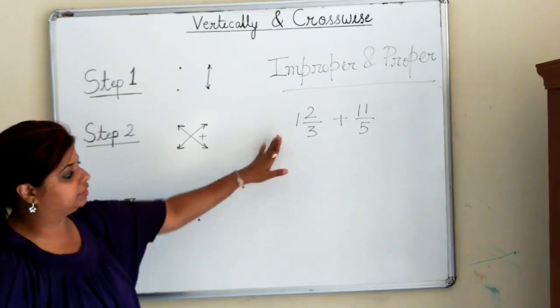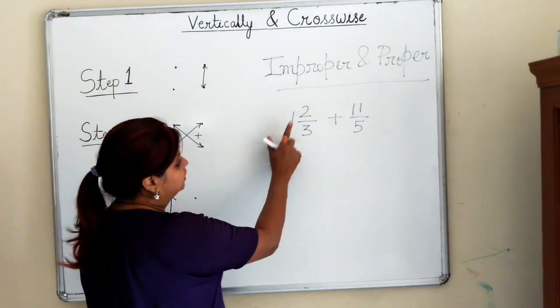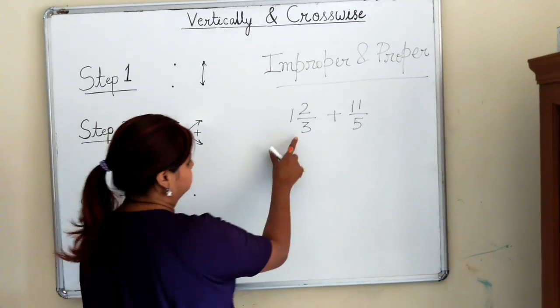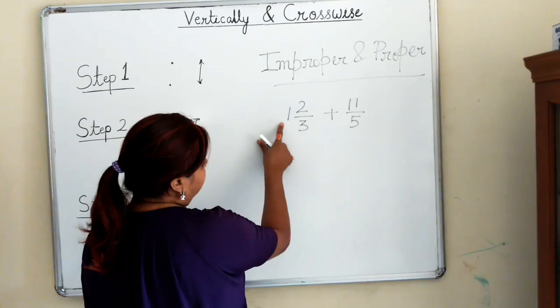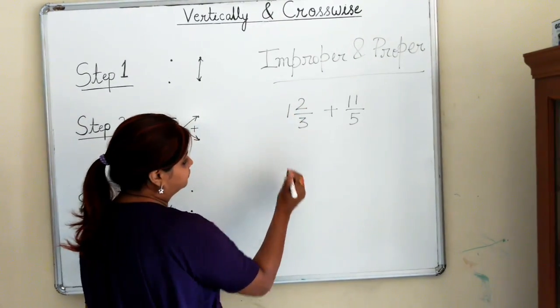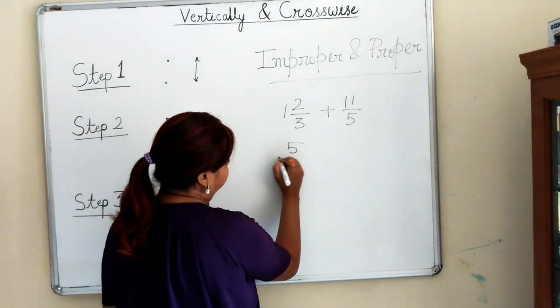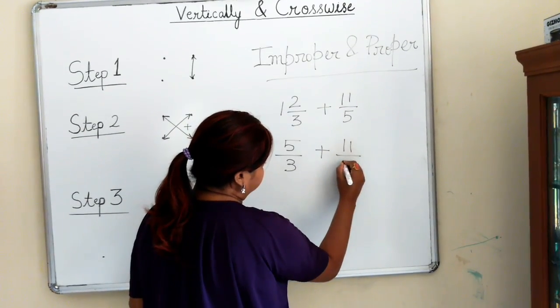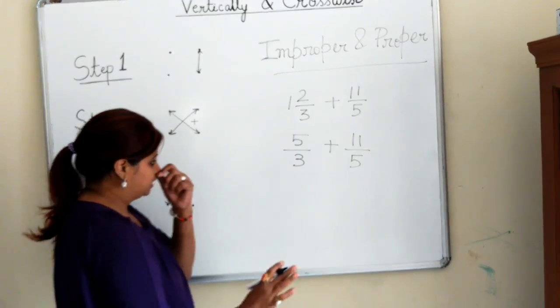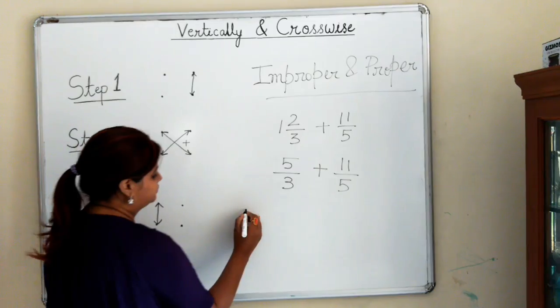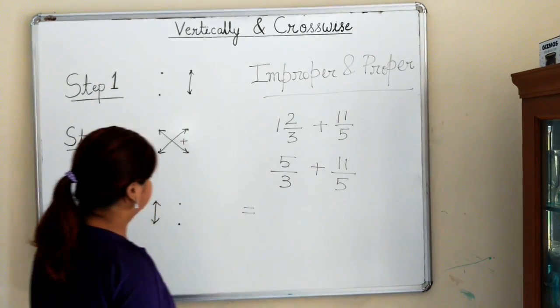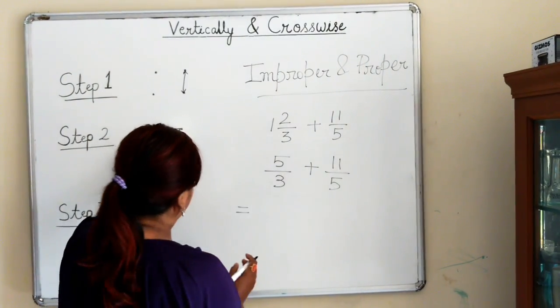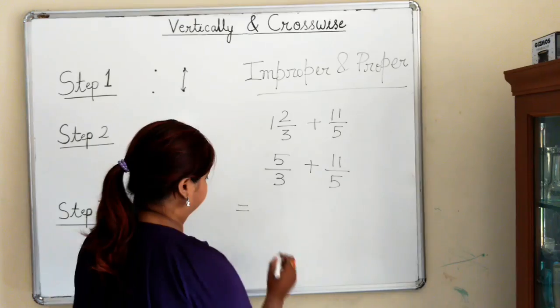Since the fraction has to be either improper or proper, and I have taken a mixed number 2⅓, I convert it to an improper fraction: 3×1+2=5, so it becomes 5/3. And 11/5 remains the same because it's already improper. Now the same step 2 will be applicable here.